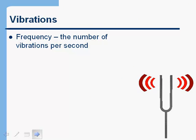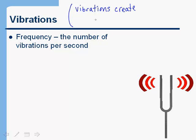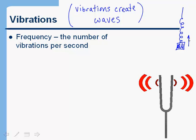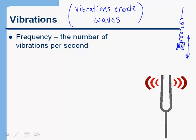Since electromagnetic energy travels in waves, let's talk about waves. Vibrations create waves. A vibration is simply something shaking back and forth. For example, if you take a mass hung from a spring and pull it down, it will oscillate or vibrate up and down — that's a vibration. Another example is a tuning fork: when you hit it, it rings and gives off a particular sound, because the tines of the tuning fork are vibrating back and forth at a certain frequency.